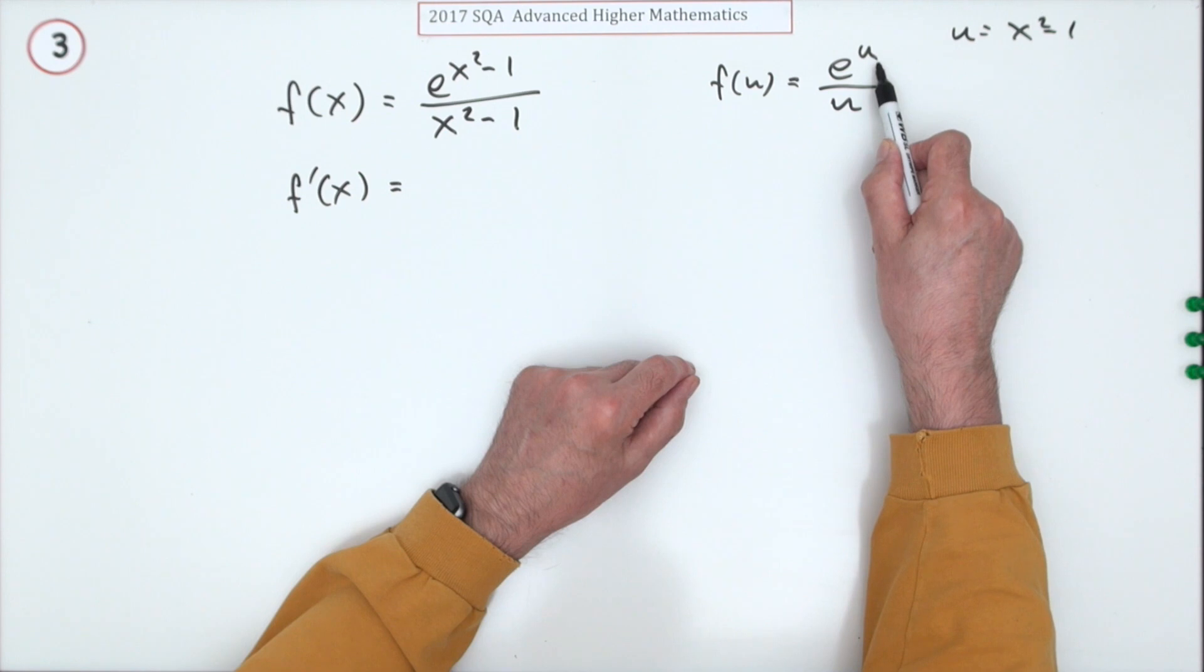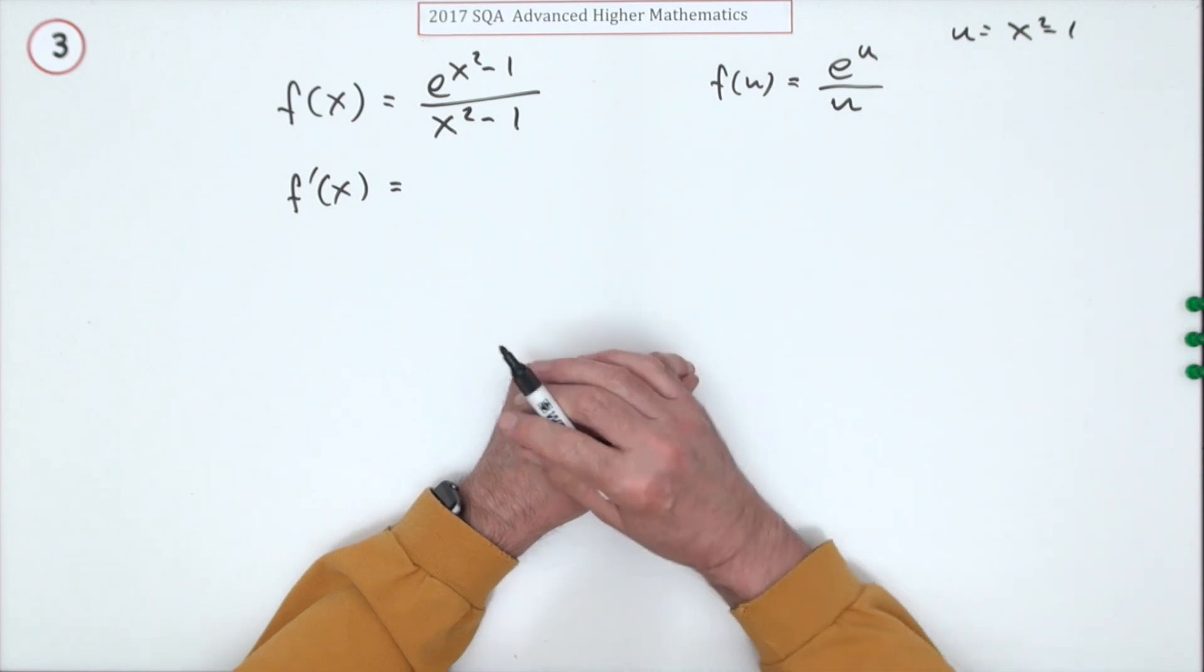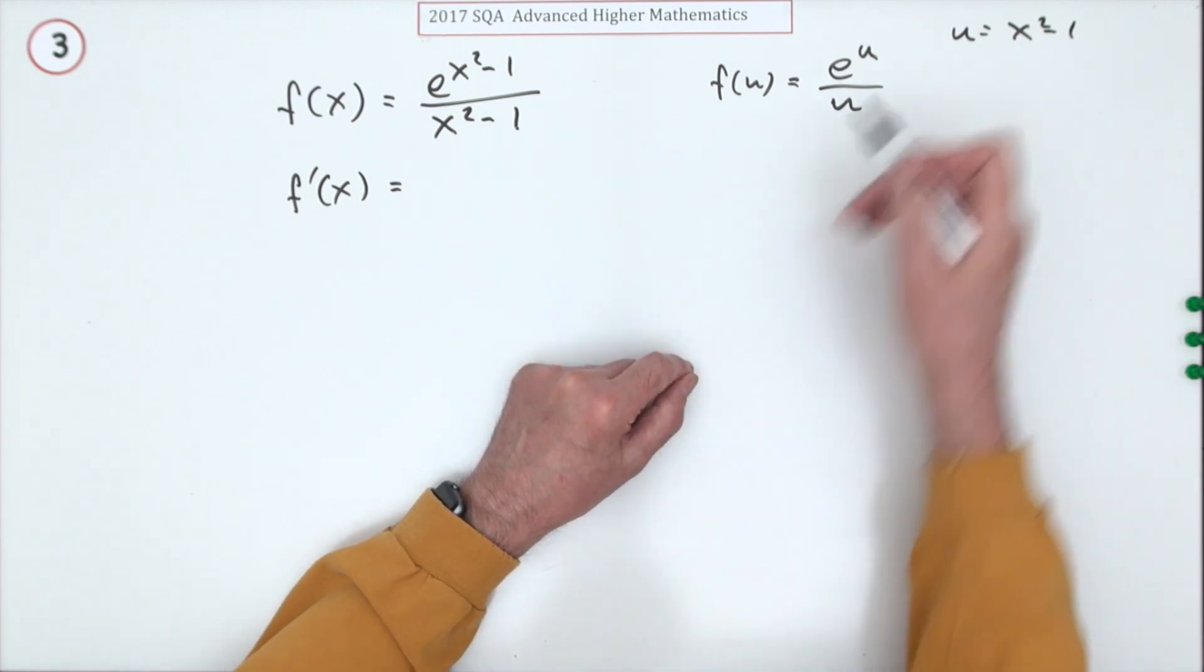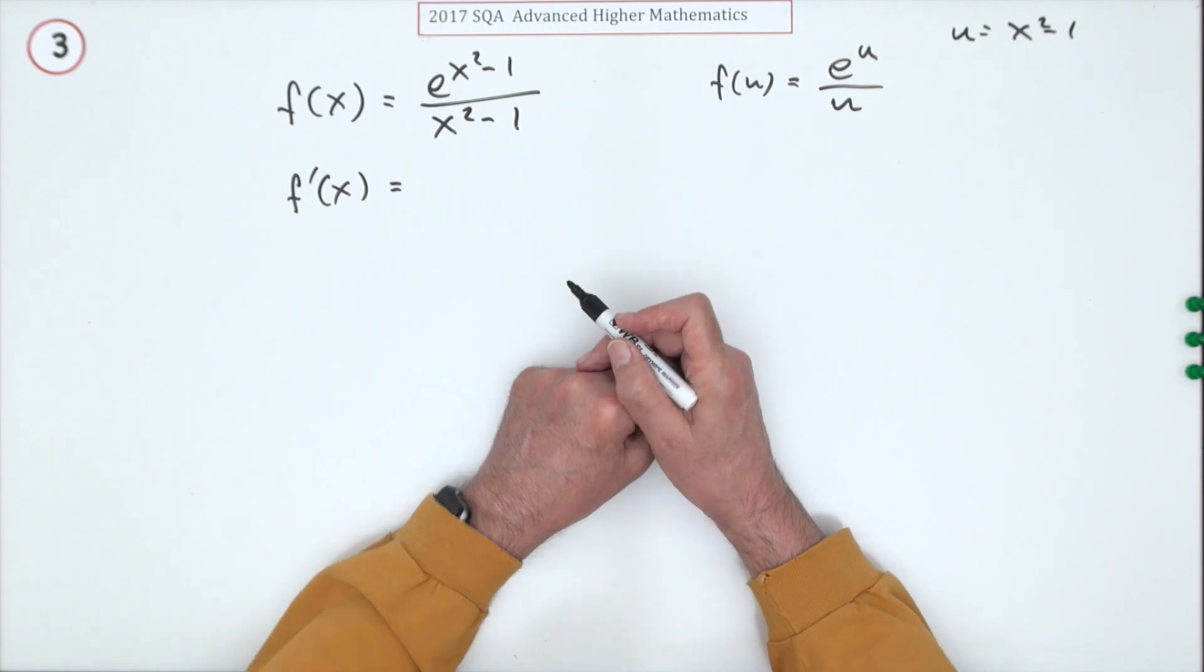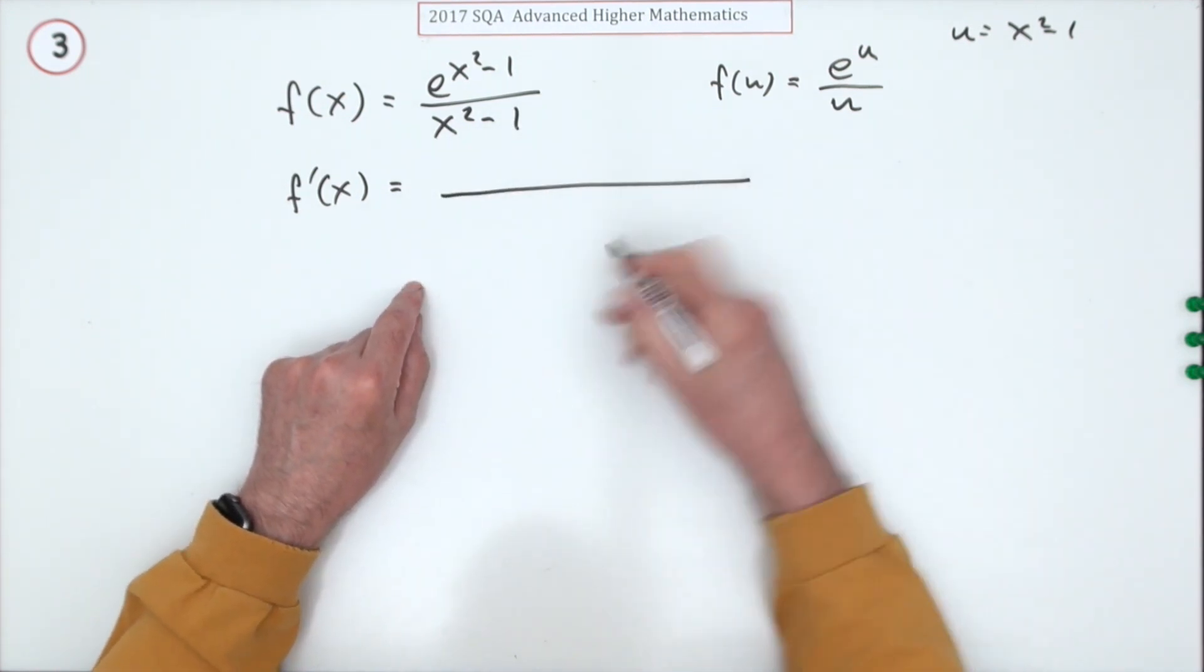The only advantage would be having shorthand to save writing x² - 1 so many times - you'd just write u. It's just shorthand, so I'm not going to bother with that. So quotient rule - what does that look like?